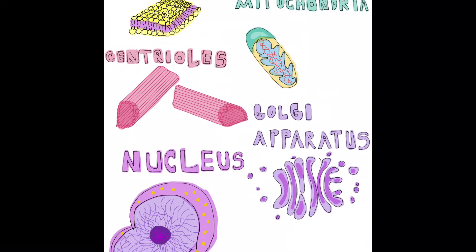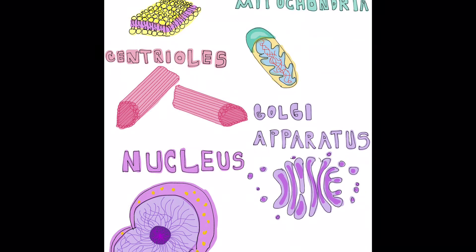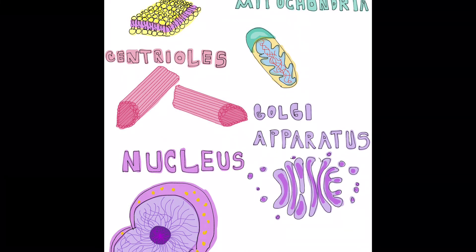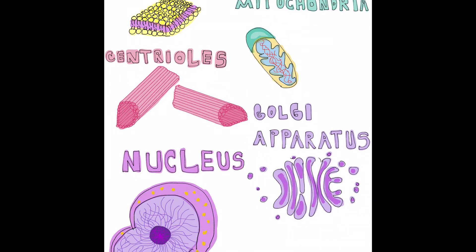The nucleolus is the RNA synthesizer. Nucleoplasm serves as a suspending substance for DNA and RNA. Nuclear pores allow small molecules and ions to freely pass into or out of the nucleus. The cell is the cell wrap — so these are the main parts of a cell.